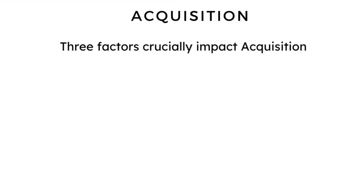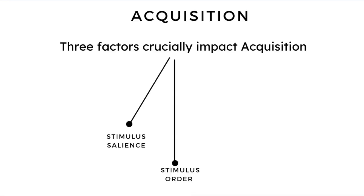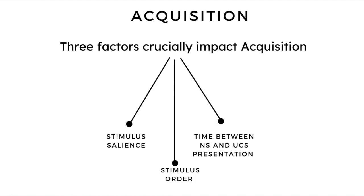Three different factors crucially impact the acquisition process. The first pertains to stimulus salience, the second pertains to stimulus order, and the final one pertains to the time between the neutral stimulus and unconditioned stimulus presentation. Let's look at each of these factors in more detail and understand how they impact acquisition.